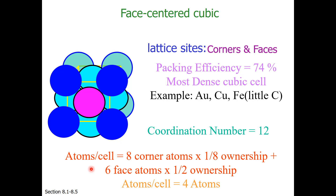The number of atoms in this unit cell is 4. There are 8 corner atoms, one eighth of which are inside the unit cell, and 6 face atoms, one half of which are inside the unit cell, for a total of 4 atoms.